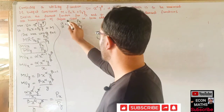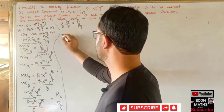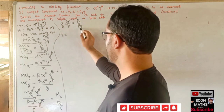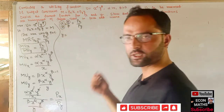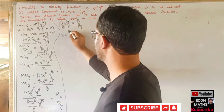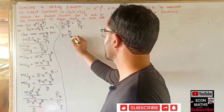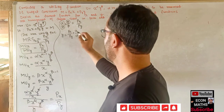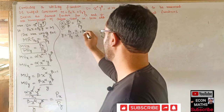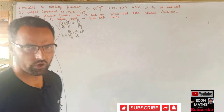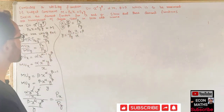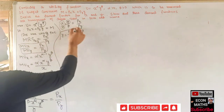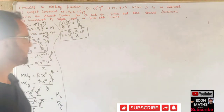Solving for y, we rearrange to get: y = (Px/Py) * (β/α) * x. This expresses y in terms of x and will be substituted into the budget constraint.